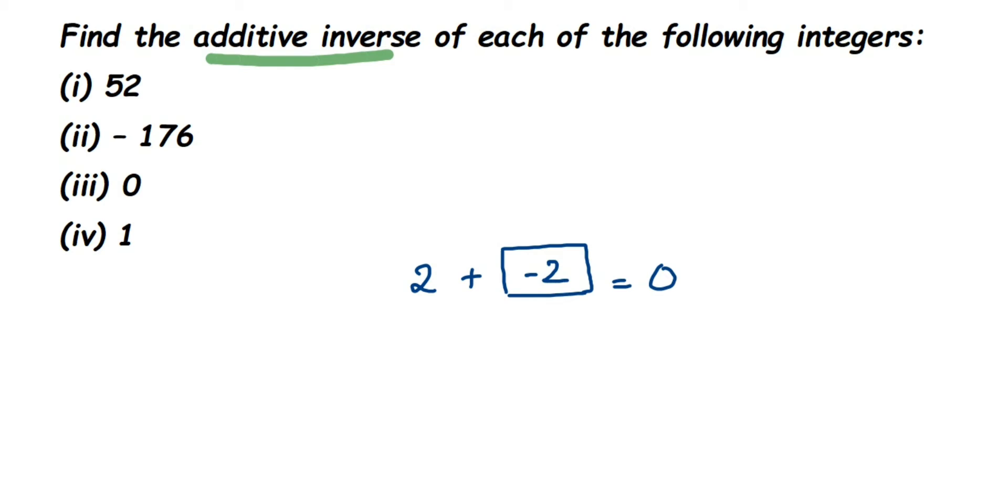Similarly, suppose I give you number minus two and I'm asking you to find out its additive inverse. So what you should add here to get zero? It will be two. So two will become additive inverse of minus two. So if you observe these two cases which are two examples, the additive inverse is nothing but the same number but opposite sign.